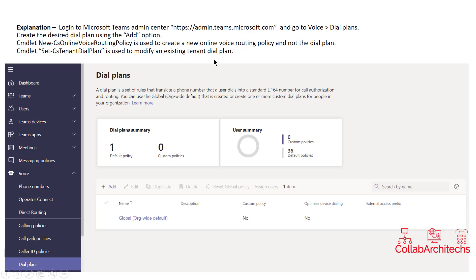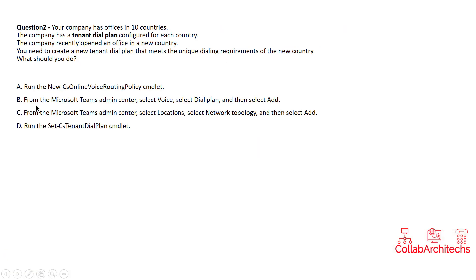The correct option should be B, where you need to go to the Microsoft Teams admin center, select Voice, then select Dial Plan, and then select Add.